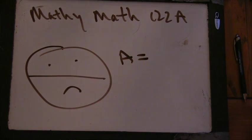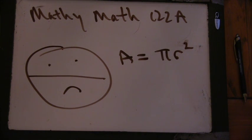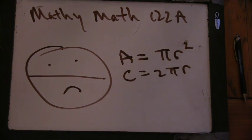Let's do it in terms of the area and the circumference. So the area of a circle is what? It's pi r squared. And what's the circumference? It's 2 pi r.